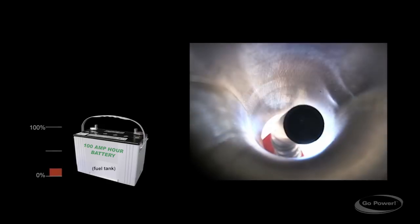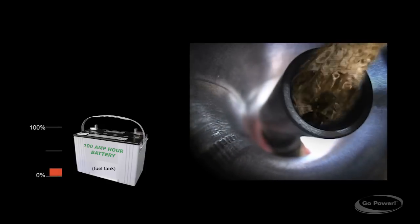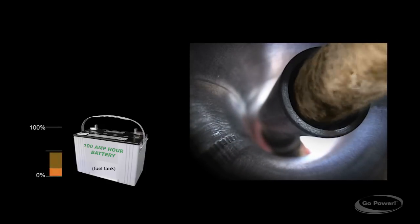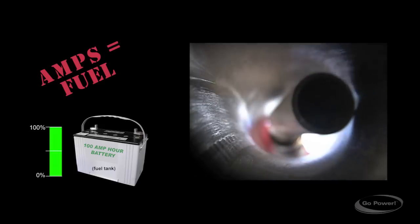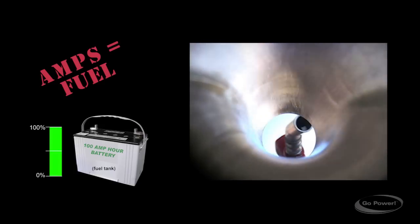So if you look here, the battery is just like the fuel tank in your car. At the bottom of the screen here we see a 100 amp hour battery, amp hours are just like gallons of fuel. Think of that like a 100 gallon gas tank.